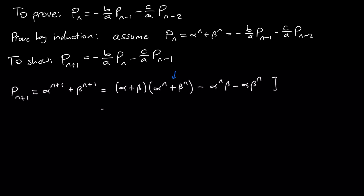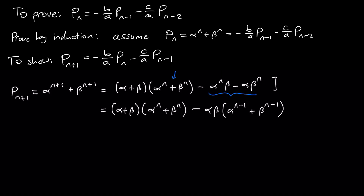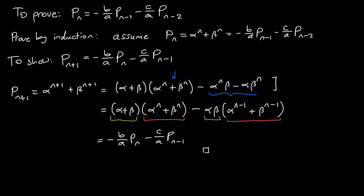I can rewrite this as (alpha plus beta) times the nth power sum, minus alpha beta times (alpha to the n minus 1 plus beta to the n minus 1). This is now expressed in terms of sums and products of roots and previous power sums. So this is the recurrence relationship: minus b over a times Pn, minus c over a times P(n minus 1). I've proven by induction that the Girard-Newton formula for quadratics gives Pn equals minus b over a times P(n minus 1), minus c over a times P(n minus 2).